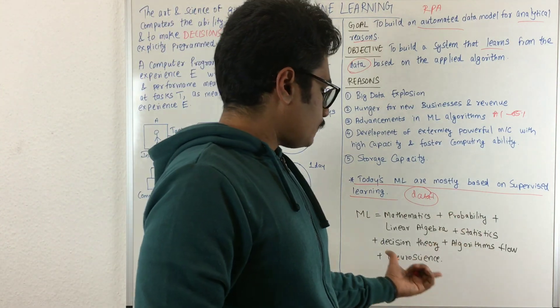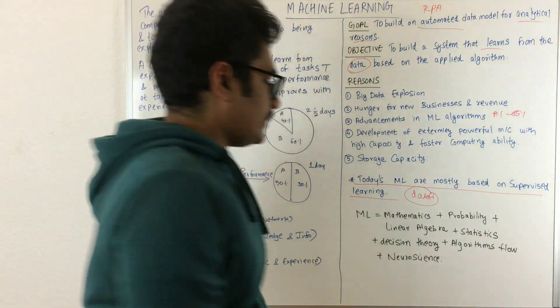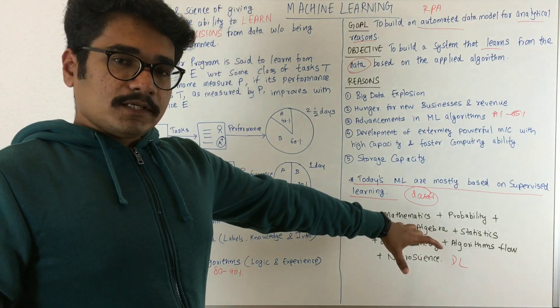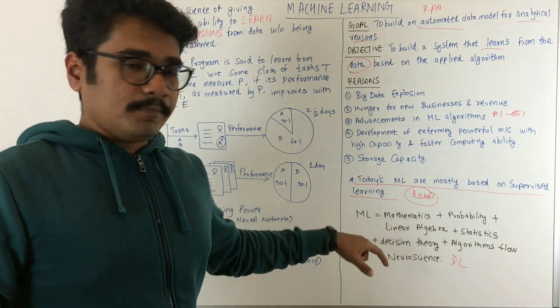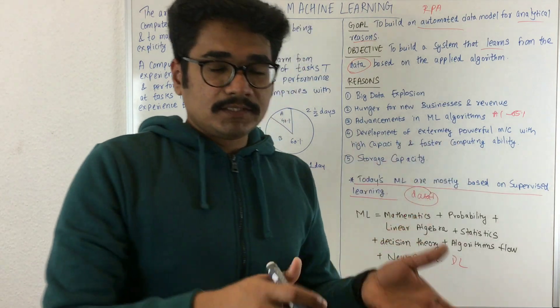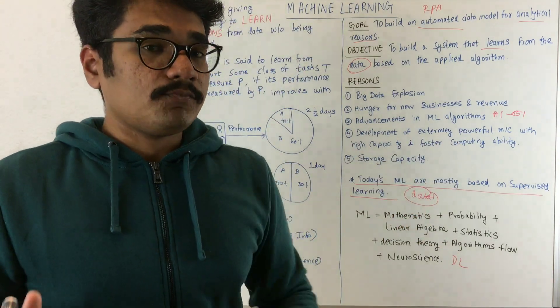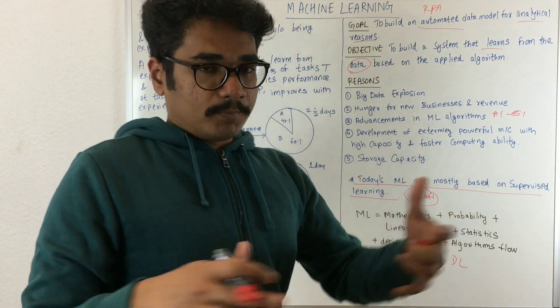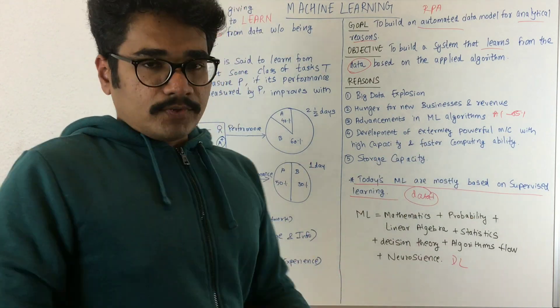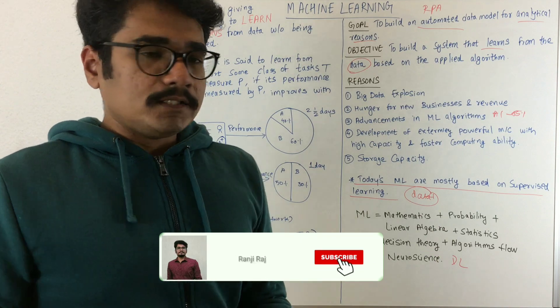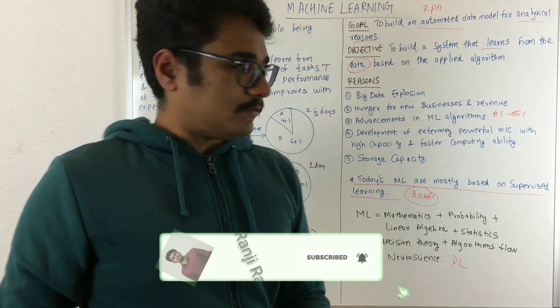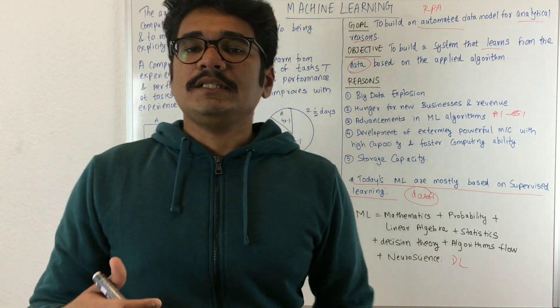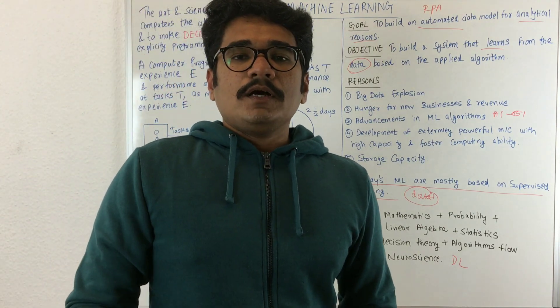You also have neuroscience, which mainly comes in deep learning. All these things comprise ML. You have mathematics, linear algebra, probabilities—all special for ML. You have Naive Bayes and many other probabilities, neural networks—all those things which we will discuss in future videos.